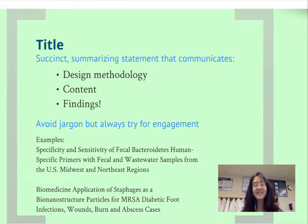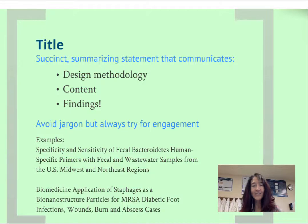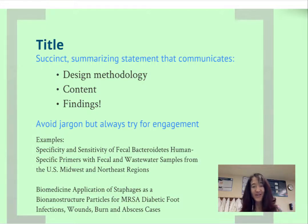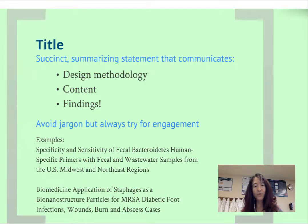We have a couple of practice titles to look at. The first one: 'Specificity and sensitivity of fecal bacteroidetes human-specific primers with fecal and wastewater samples from the U.S. Midwest and Northeast region.' There are some cool things about this title — it does contextualize. You know it's in the U.S. Midwest and Northeast regions, we're working with fecal wastewater samples, and there's something about using primers. But it's interesting that this title doesn't have an active verb, so we're a little bit uncertain what they're doing with these primers — we think they may be measuring specificity and sensitivity, but it might help to have an active verb.